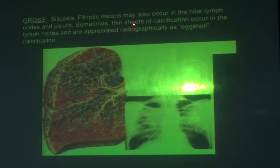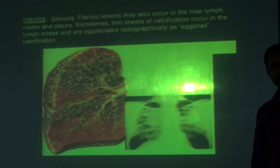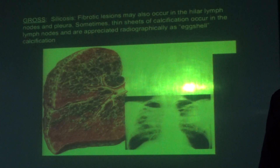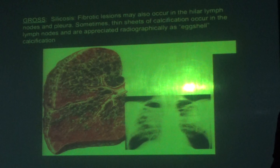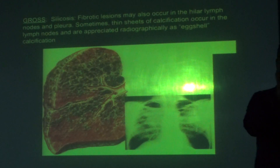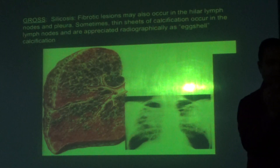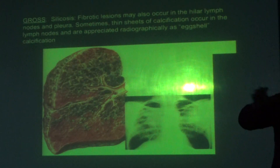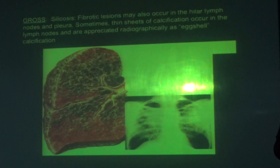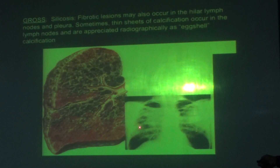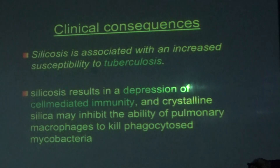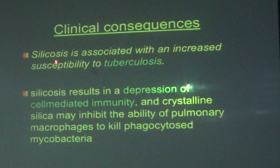The X-ray of silicosis shows an eggshell appearance — a whitish shell-like pattern — rather than the complete whitish fibrosis seen in coal worker pneumoconiosis. Hyaline lymph nodes may also be seen. The difference lies in this eggshell calcification pattern visible on chest X-ray in silicosis.